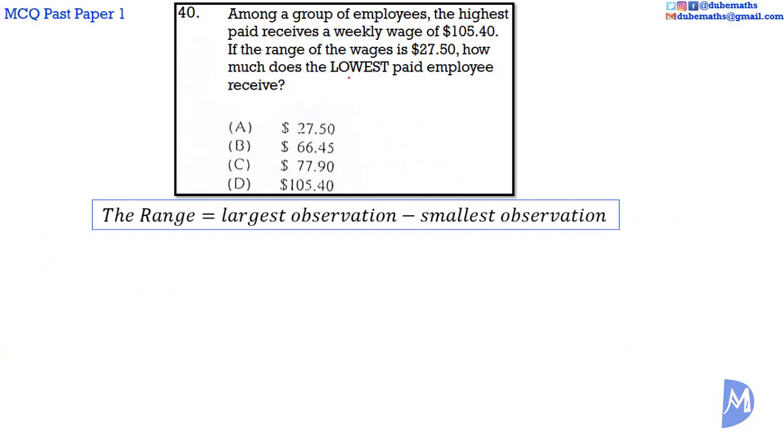How much does the lowest employee receive? The range is equal to the highest paid minus the lowest paid. We're going to find out how much the lowest paid receives by making the lowest paid the subject of the formula.